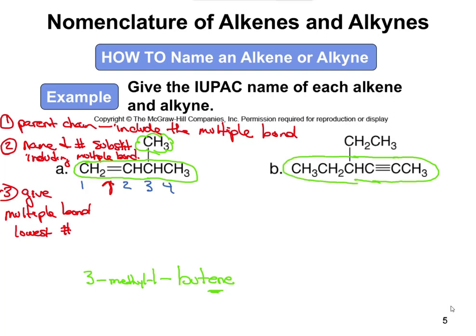So now we can go ahead and number our carbons: carbon 1, 2, 3, 4, 5, and 6. That's our six carbons. If I had numbered them from left to right, the multiple bond would have a much higher number — it would be carbon 4 if we went the other direction: 1, 2, 3, 4, 5, 6. So we don't want that. We'd much rather use number 2 as opposed to number 4 for naming our multiple bond.